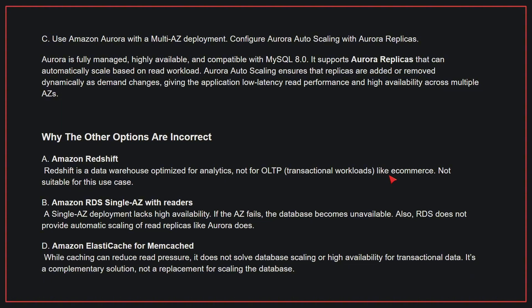Why the other options are incorrect: A — Amazon Redshift is a data warehouse optimized for analytics, not for OLTP like e-commerce; it's not suitable for this use case. B — An Amazon RDS single-AZ deployment with readers lacks high availability; if the AZ fails, the database becomes unavailable, and RDS does not provide automatic scaling of read replicas like Aurora does. D — Amazon ElastiCache for Memcached can reduce read pressure, but does not solve database scaling or high availability for transactional data; it's a complementary solution, not a replacement. Therefore, the correct answer is C.